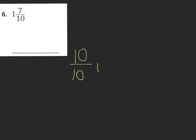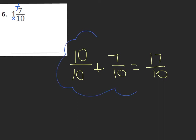Press pause and try to do 1 and 7 tenths on your own, then press play to check. For this one, your whole is cut into tenths, so that would be 10 tenths as my whole, plus 7 tenths, which equals 17 tenths. Checking with multiplication: 10 times 1 is 10, plus 7 more is 17. You have one whole cut into tenths with 10 shaded, plus 7 more tenths equals 17 tenths altogether.